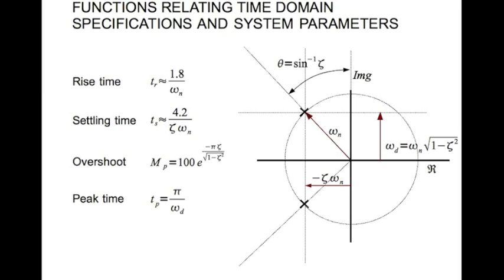Now there are some interesting things that go on here. If omega n is constant, then rise time is constant. Omega n is constant all over this circle here — so any system whose roots lie on this circle has the same rise time. Similarly, when the product zeta omega n is constant, settling time is constant. So any system whose roots lie on this vertical line has the same settling time.